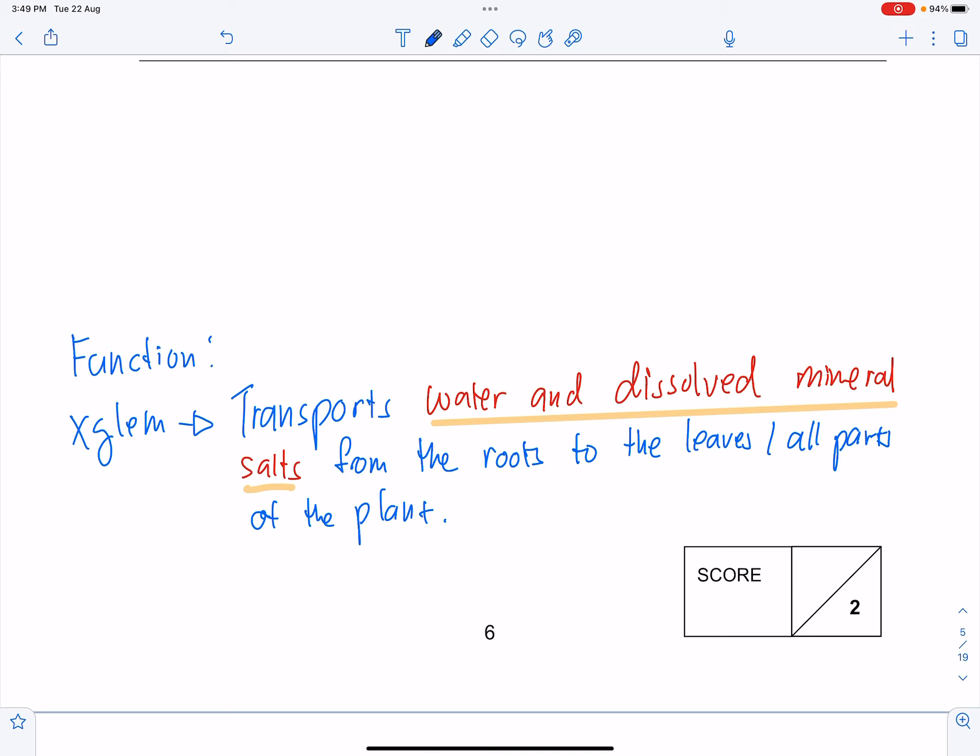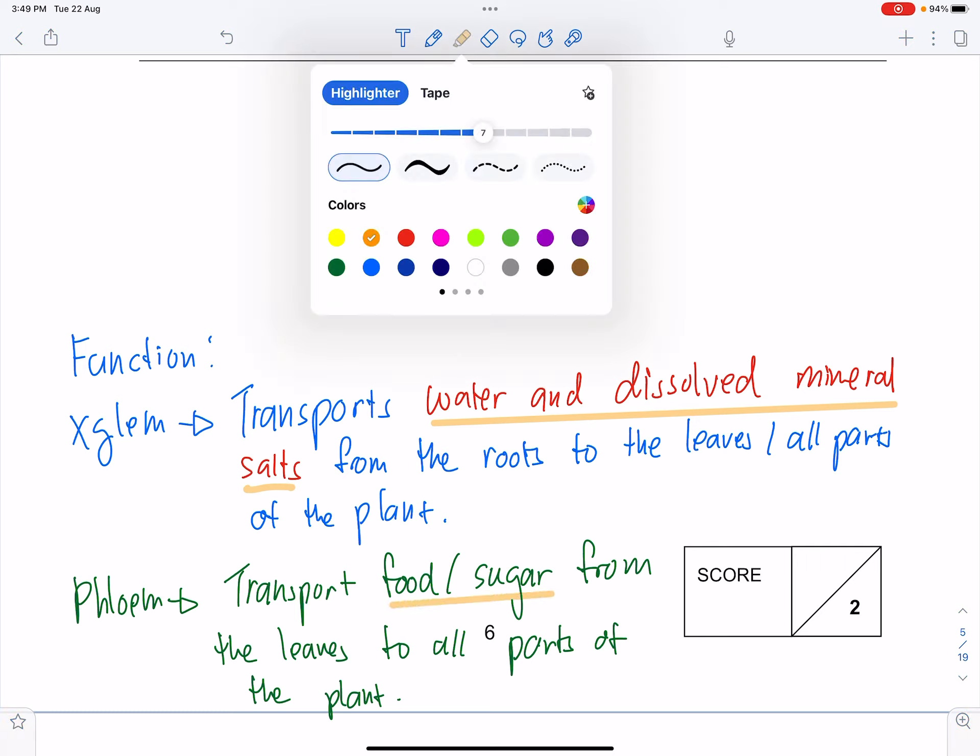And then after that, what is the function of your phloem or your food carrying tube? It will be to transport food or sugar from the leaves to all parts of the plant. You need to know what are we transporting and from where to where.